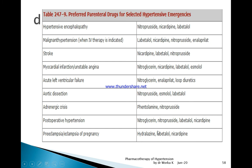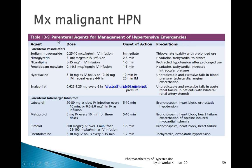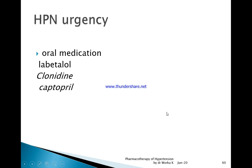Eclampsia is preeclampsia with generalized tonic-clonic seizure — hydralazine, labetalol, or nicardipine can be used. Regarding parenteral vasodilators, sodium nitroprusside acts immediately but can cause thiocyanate toxicity with prolonged use, especially in patients with renal problems. Labetalol, as a beta and alpha blocker, can cause bronchospasm, heart block, and orthostatic hypotension as side effects. For hypertensive urgency — severely raised blood pressure without organ damage — oral medications like labetalol, clonidine, or captopril can be used.